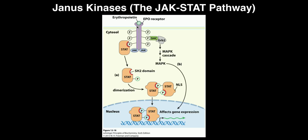Let's talk about how the JAK-STAT pathway works. We're going to start with the Janus kinases — the JAKs. These are proteins that are in the membrane; as you see here, they're purple. You'll notice that the Janus kinase, at least the structure of it, is very similar to the receptor tyrosine kinases.